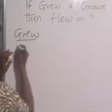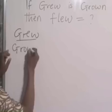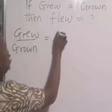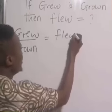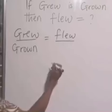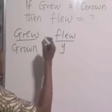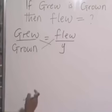Grew over grown is equal to flew over the past participle we don't know, so we can represent it with y. Then cross multiply.